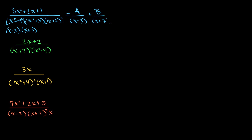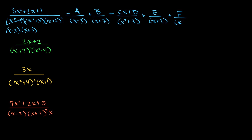And now we have this irreducible quadratic term, which we saw a few videos ago. We need one degree less in this numerator, so it's (Cx + D) over (x squared plus 3). And then lastly we have these repeating linear factors. We can think of these kind of like decimal expansion, so we have E over (x plus 2) and then F over (x plus 2) squared. That is the partial fraction setup for this rational expression.